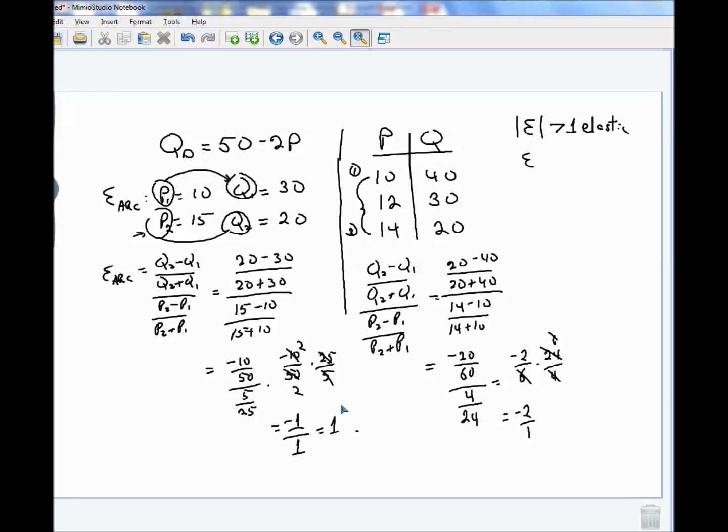If it turns out that the elasticity that you calculated is less than 1, it's inelastic. And if it turns out the special case, if the elasticity is exactly equal to 1, which is what we got in the first case, that's called unitary elastic.